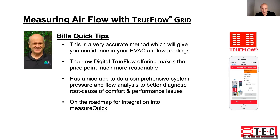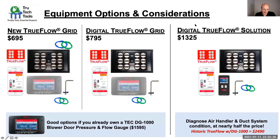This is also on the road map for integration into MeasureQuick — for MeasureQuick fans or people not familiar with it, you should really take a close look at that. Here's the lay of the land with equipment options: we're talking about the new TrueFlow grid as opposed to the historic air handler duct system TrueFlow grid, which in combination with the DG100 could run up to almost $2,500. Now the new TrueFlow grid is $695. You couple it with some kind of digital manometer to get the measurements. There's also a digital TrueFlow grid which has the pressure sensors built right into it, really enhancing the facility of using this one device.